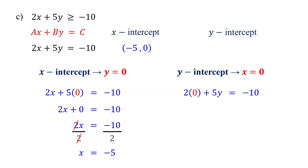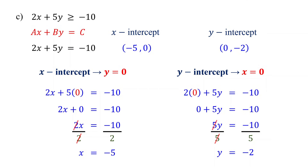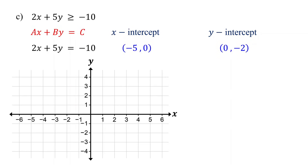The y-intercept occurs when x equals 0. Set x to 0 and solve for y. This simplifies to 5y equals negative 10. Dividing both sides by 5, you find that y equals negative 2. Therefore, the y-intercept is 0 comma negative 2, which is where the line crosses the y-axis. Now plot the intercepts on the coordinate plane, then draw the boundary line. Since the inequality is greater than or equal to, use a solid line. No matter the form, graphing inequalities always starts with graphing their related linear equations, so mastering how to graph linear equations is key.